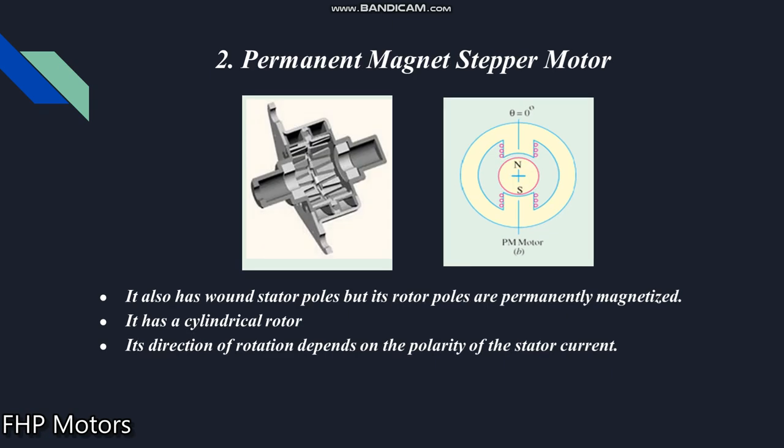Second is the permanent magnet stepper motor. Like the variable reluctance stepper motor, the stator of this motor also has wound poles, but its rotor poles are permanently magnetized. You can see the N and S poles of the permanent magnet, hence the name permanent magnet stepper motor. This motor has a cylindrical rotor, and the direction of rotation depends upon the polarity of the stator current.